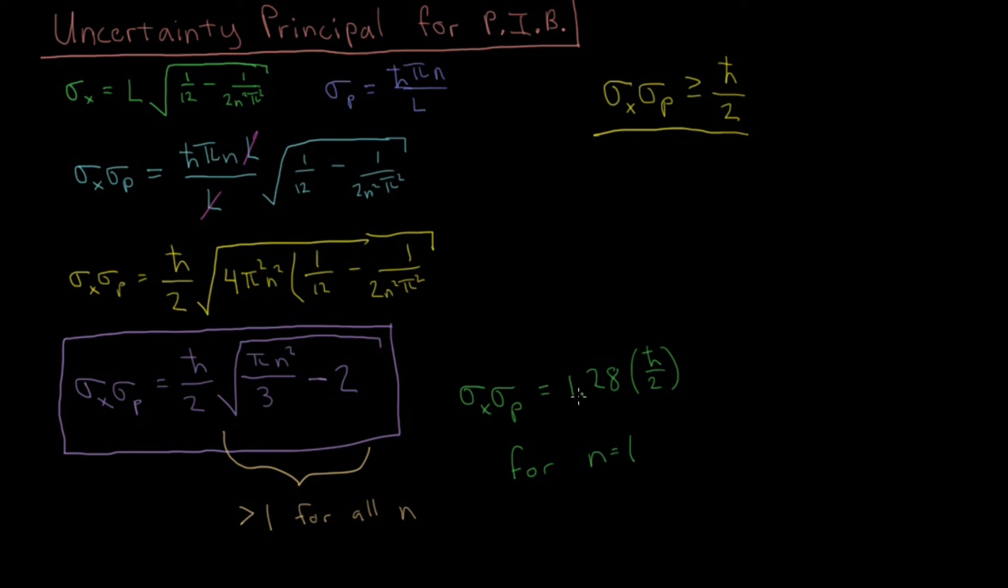So we indeed do obey the uncertainty principle. That's good. This is a mathematical description of how this uncertainty principle manifests itself in mathematical systems. So it's not a property of measurement alone that this uncertainty has to follow the Heisenberg uncertainty principle. It has to be greater than or equal to ℏ/2. This is an intrinsic mathematical property of how quantum mechanics works. For every system we solve, this product of uncertainties will be greater than or equal to that minimum value of ℏ/2.